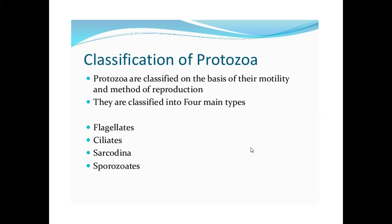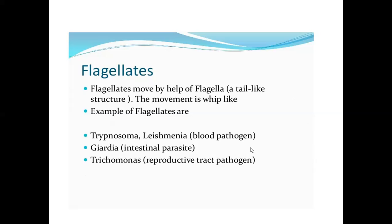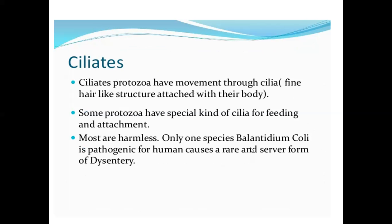Classification of Protozoa: protozoa are classified on the basis of their motility and method of reproduction. They are classified into four main types: first, flagellates; second, ciliates; third, Sarcodina; and fourth, sporozoans. Flagellates move by flagella, a tail-like structure. The movement is whip-like.